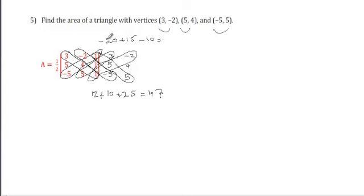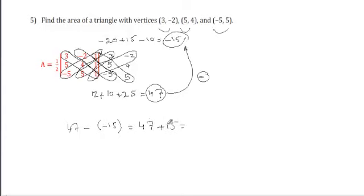And then we add them all. -20 plus 15, which is -5, and -10, which is -15. Let's make sure: -20, -30, plus 15, -15. That's good. And finally, we do the difference between the sum of the products we did. We do 47, this one, minus this one. We do the one that we did at the beginning, we add them all, we get 47. And the second part we did, we put it up, and we do this one minus this one. So we say 47 minus -15, which is going to equal 47 plus 15, which equals 62.